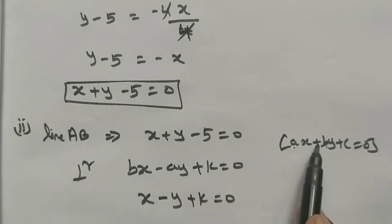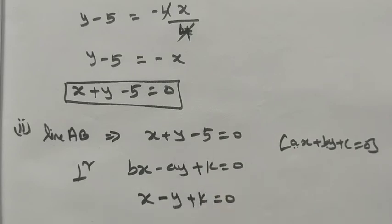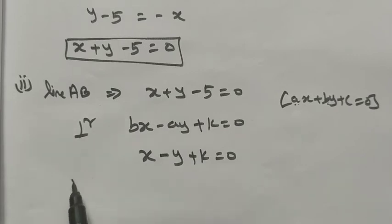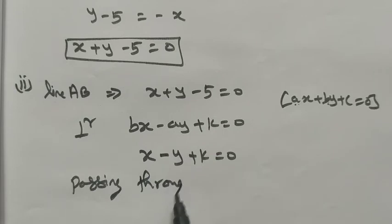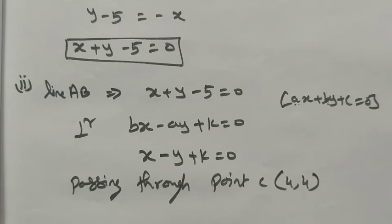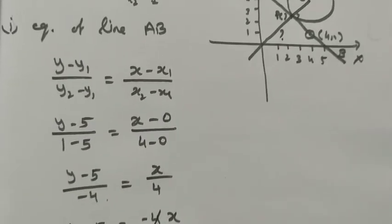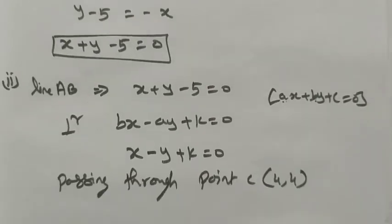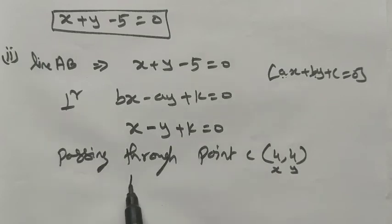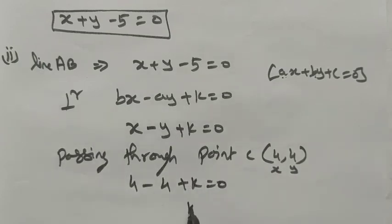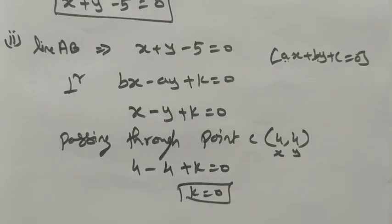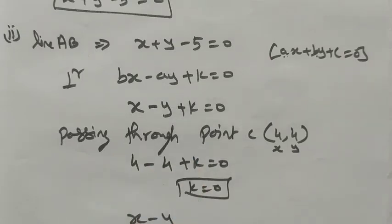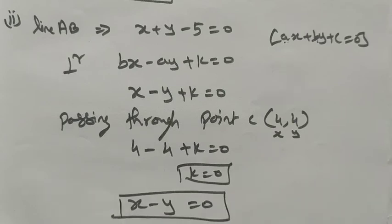Since the perpendicular line passes through center C(4,4), substitute x = 4, y = 4 into x - y + k = 0: 4 - 4 + k = 0, so k = 0. Putting k = 0 into the equation gives x - y = 0. This is the equation of the second line — the line through C perpendicular to AB.